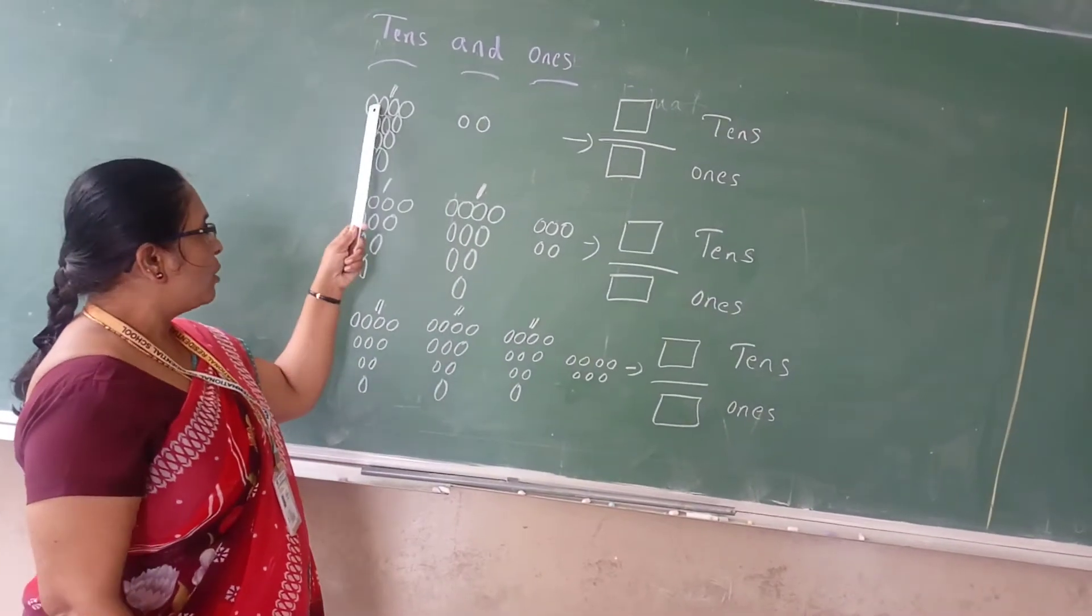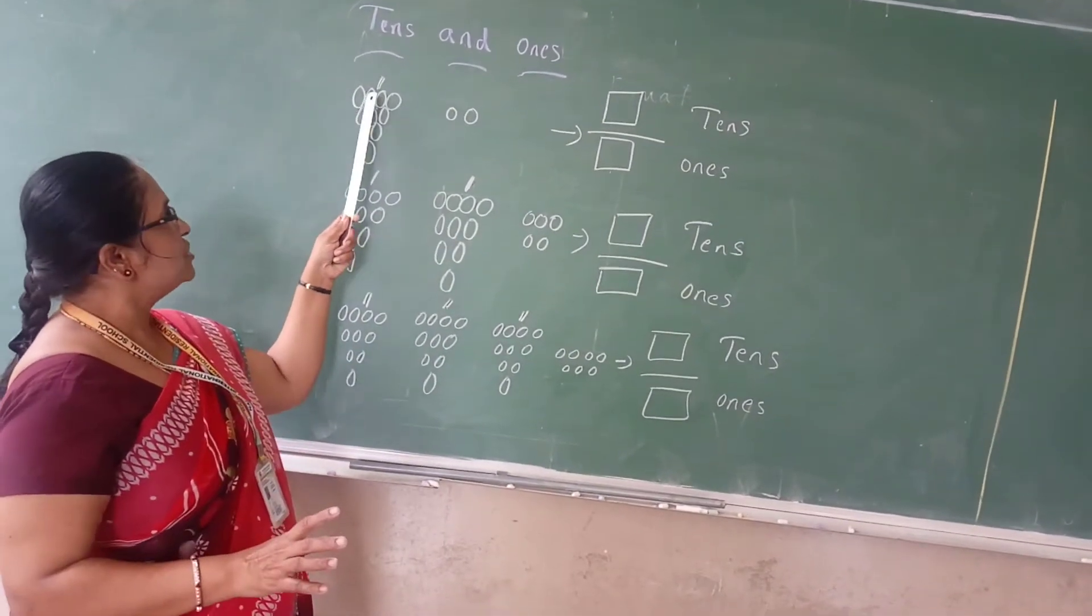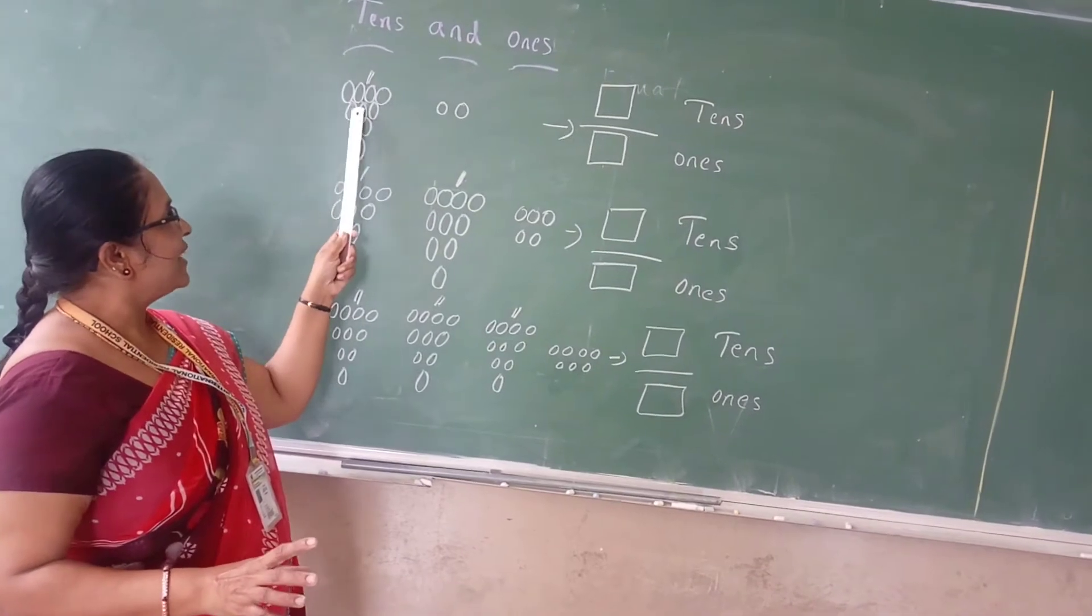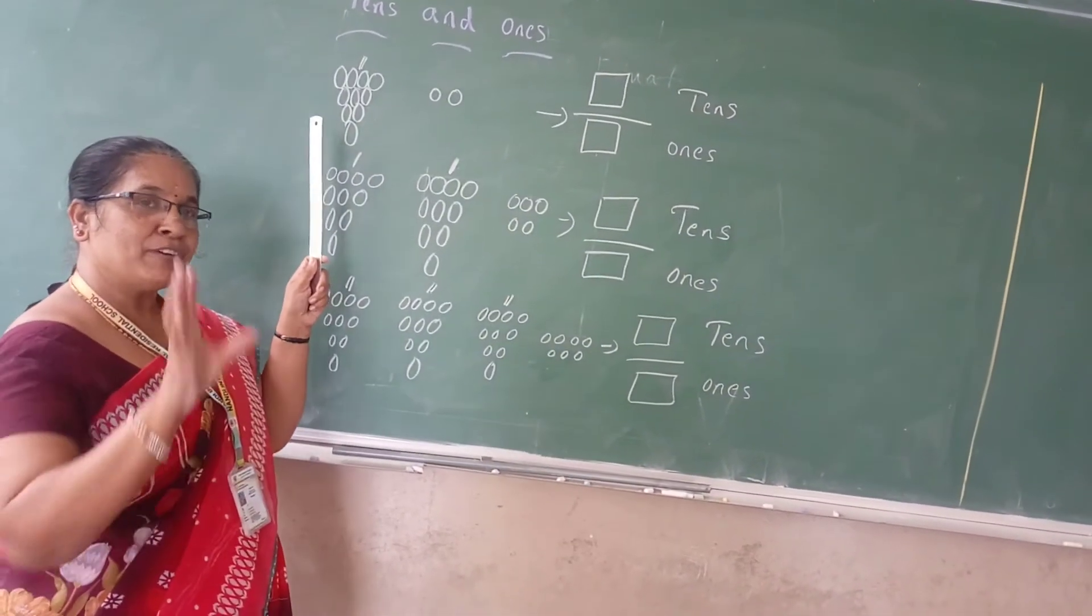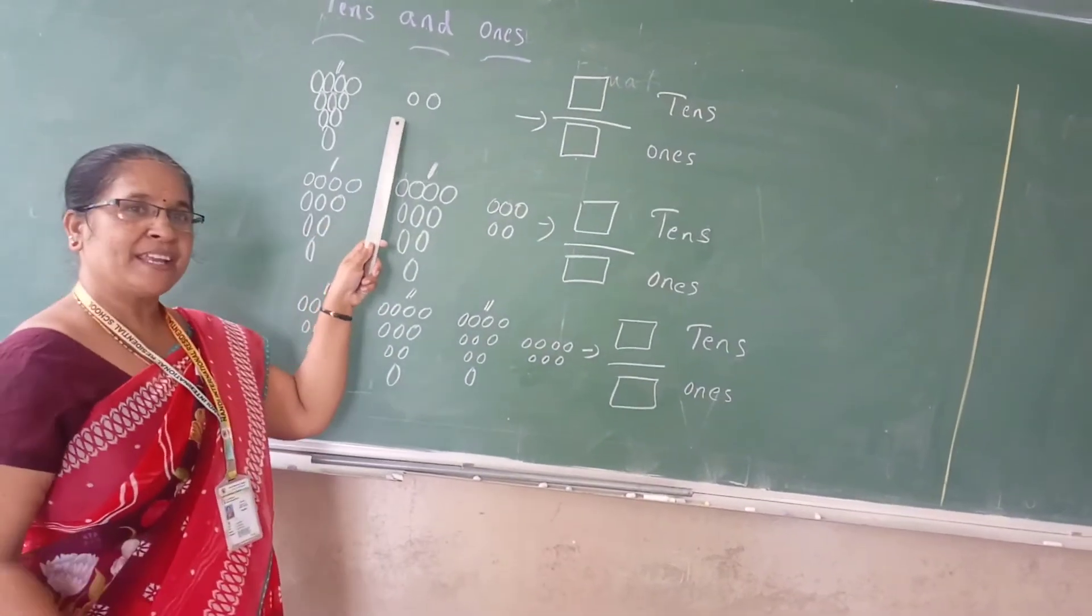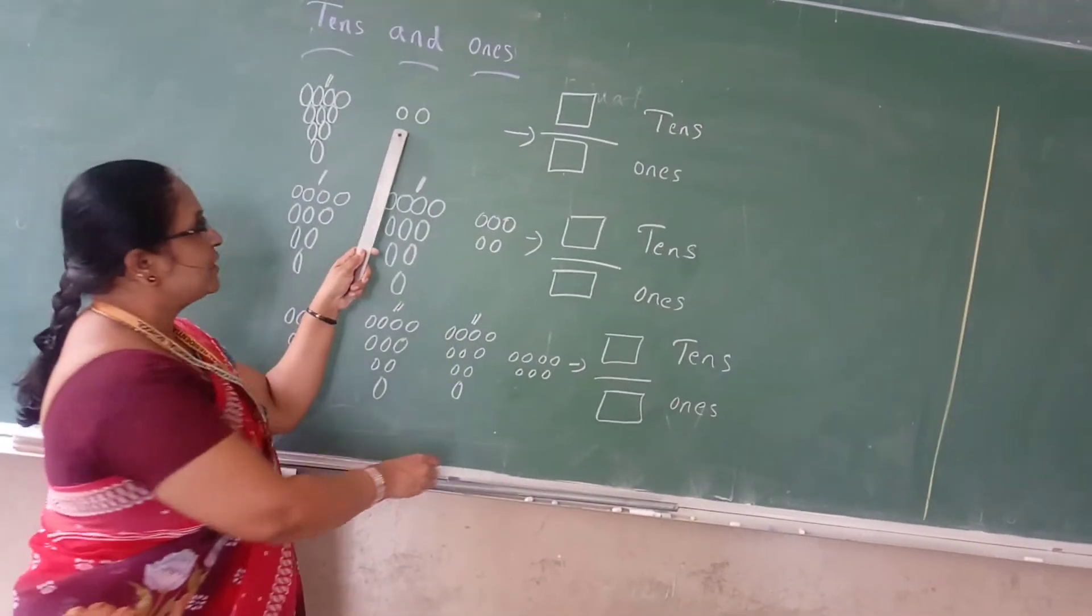See, how many rods are arranged in one loop? 1, 2, 3, 4, 5, 6, 7, 8, 9, 10. How many are there in one loop? 10 rods. Okay, extra how many are there here? Extra how many are there? 2.